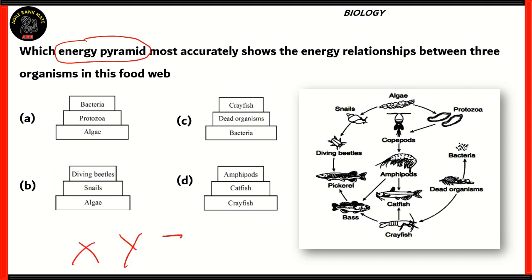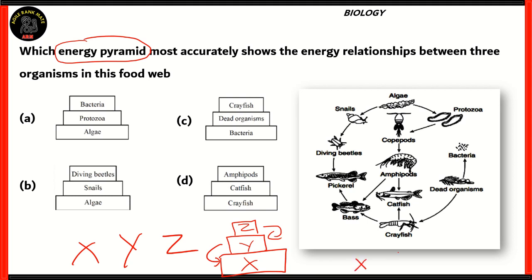For example, if we have three organisms X, Y, and Z placed in an order — X, Y, and Z — this shows that Y eats X and Z eats Y. If we are seeing it in a food chain or food web, it will be like this: X is being consumed by Y, and Y is being consumed by Z.